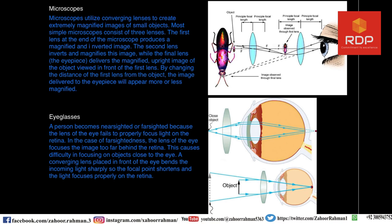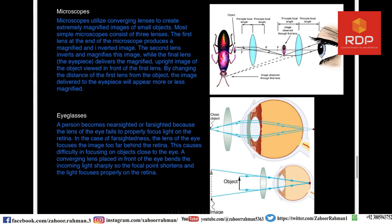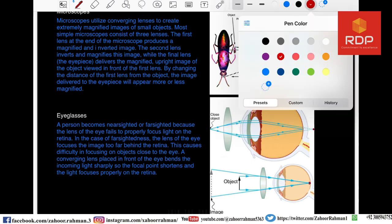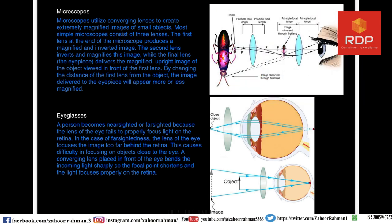The final lens — the eyepiece — delivers a magnified, upright image of the object placed in front of the first lens. By changing the distance of the first lens from the object, the image delivered to the eyepiece will appear more or less magnified.